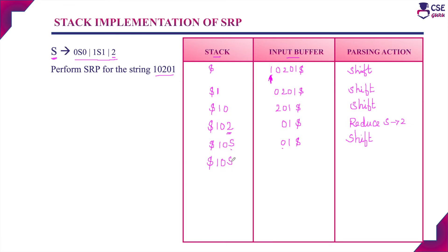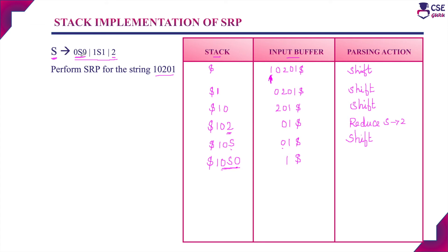Now the stack contains 1, 0, S, 0 and the input buffer contains 1. The top element of the stack is 0, so we check for a handle — 0, or S 0, or 0 S 0, or 1 0 S 0. The handle may be a substring or the complete string. There is a matching substring 0 S 0, so we can reduce it to S. We reduce 0 S 0 to S, and the stack now contains 1, S.